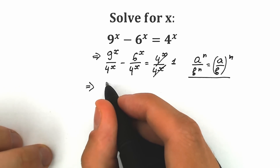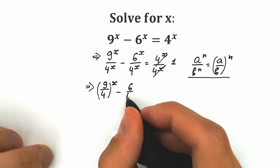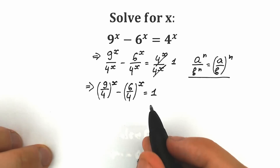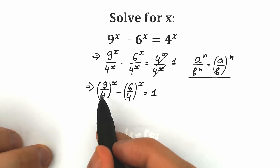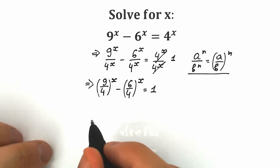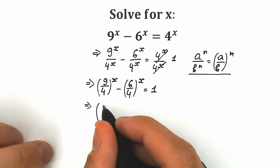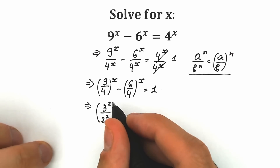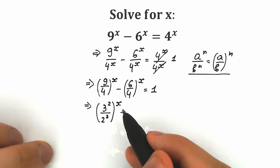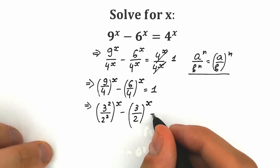Applying the property, we have (9 over 4) to the power x minus (6 over 4) to the power x equal to 1. Now, a lot of students try to cancel 9 over 4, but notice that 9 equals 3 squared and 4 equals 2 squared. So let's write 9 as 3 squared and 4 as 2 squared. For 6 over 4, we can cancel by 2, giving us 3 over 2 to the power x equal to 1.